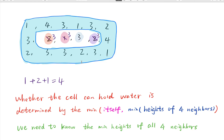Let's see what decides how much water we can hold. This is based on the minimum height of its four neighbors. Imagine the neighbors are 4, 3, 3, and 3. We know this cell can hold water, and the water it can hold is 3 minus 2. So that means we need to know the minimum height of each cell. We can use a data structure that is a heap.